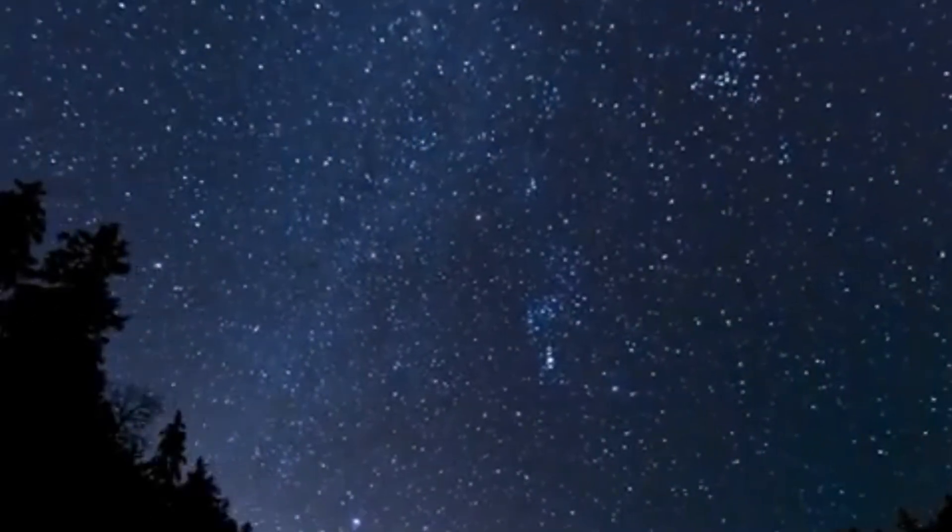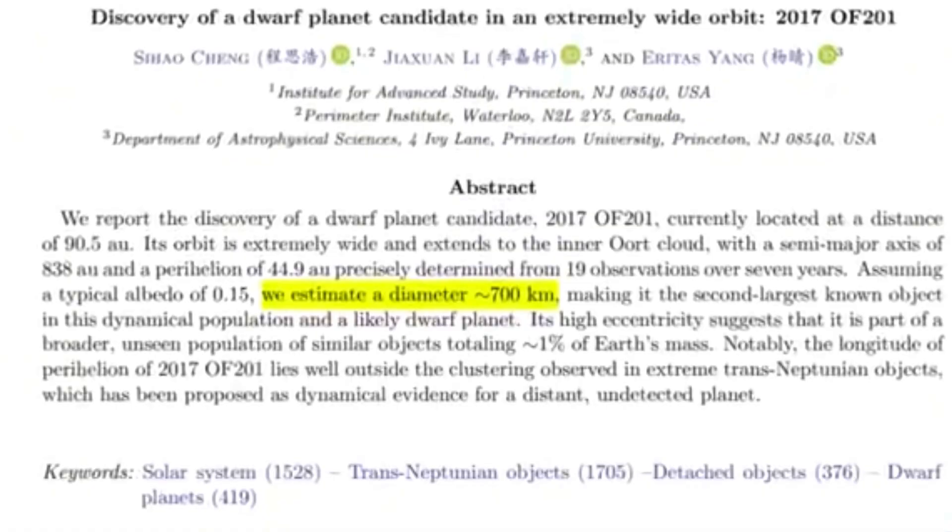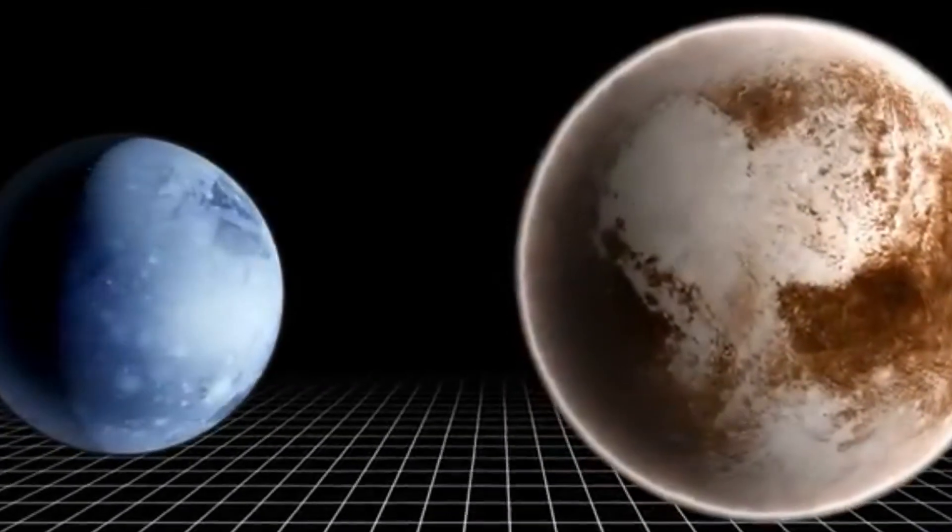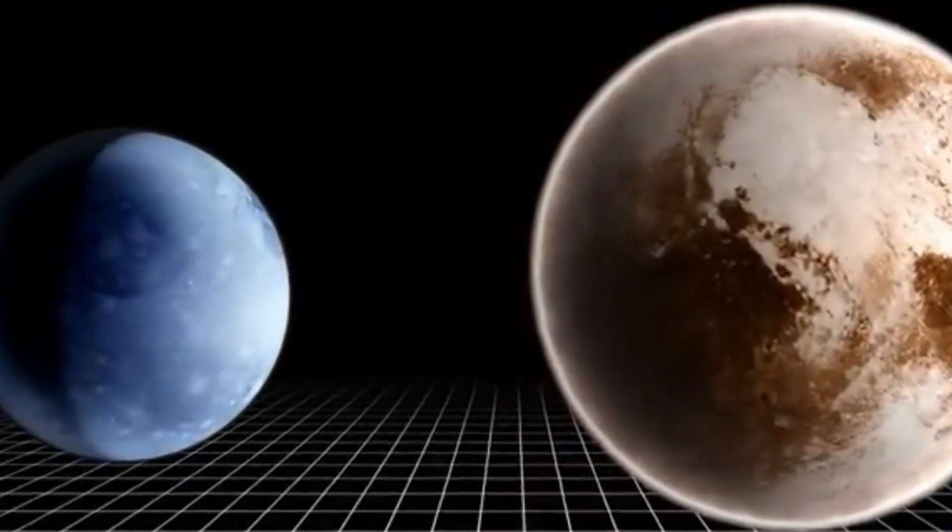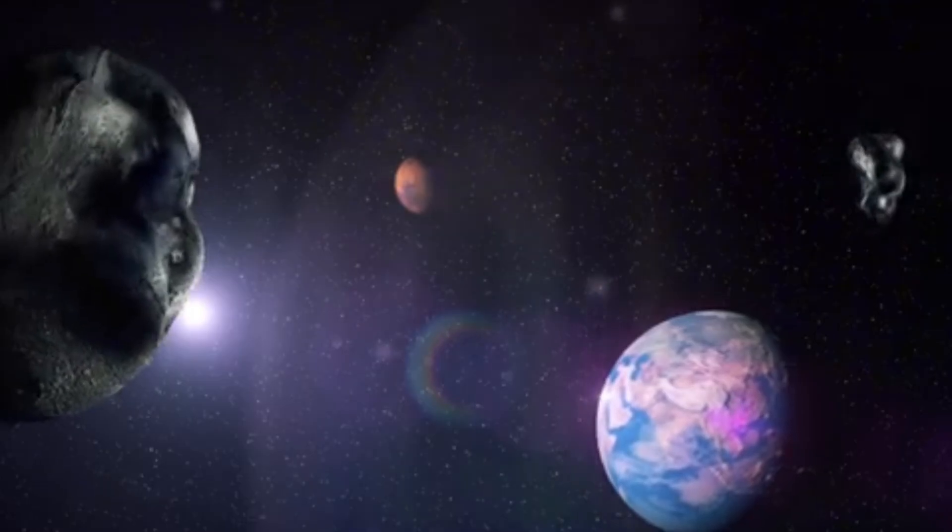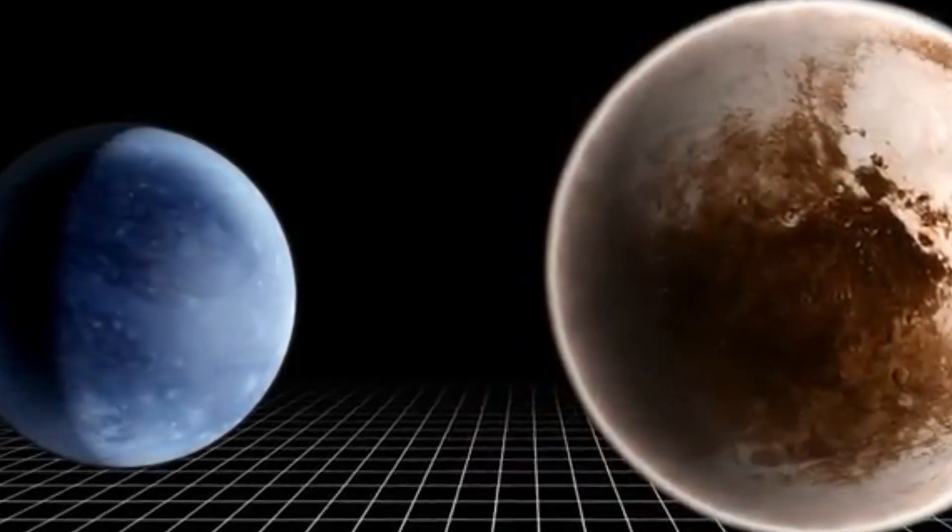However, this also means that the researchers not only had the right instinct, but also good timing. In fact, the object spends less than 1% of its time in regions that are visible to our telescopes. The dwarf planet only came into our sights because it passed its closest point to the Sun and Earth relatively recently.